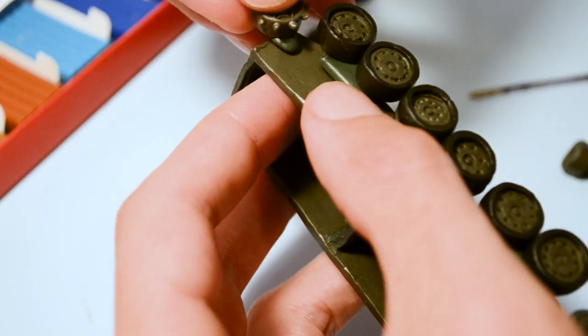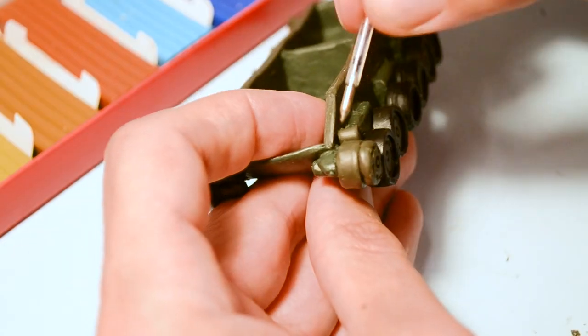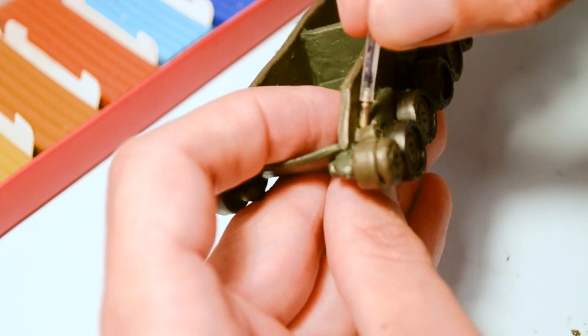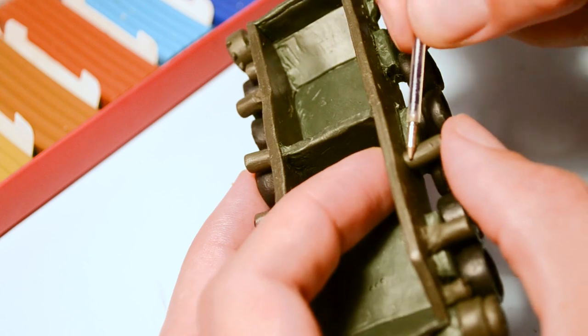The Horstmann design didn't offer the same ride quality as the Christie system, but took up less room and was easy to maintain. In case of damage by mines, individual suspension and wheel units could be replaced relatively easily.